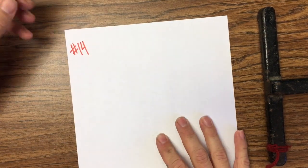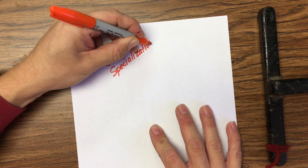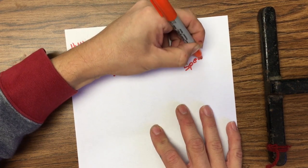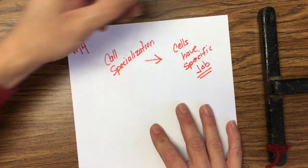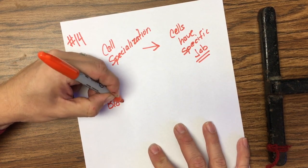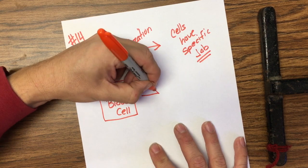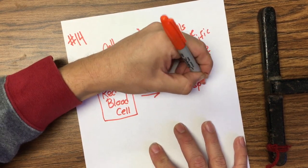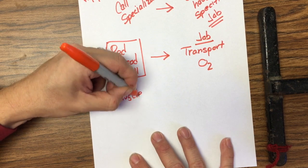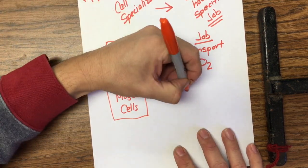Question number 14: cell specialization. Cell specialization means that cells have specific jobs — they're specialized to do specific tasks. For example, the red blood cell has a special job, which is to transport oxygen.